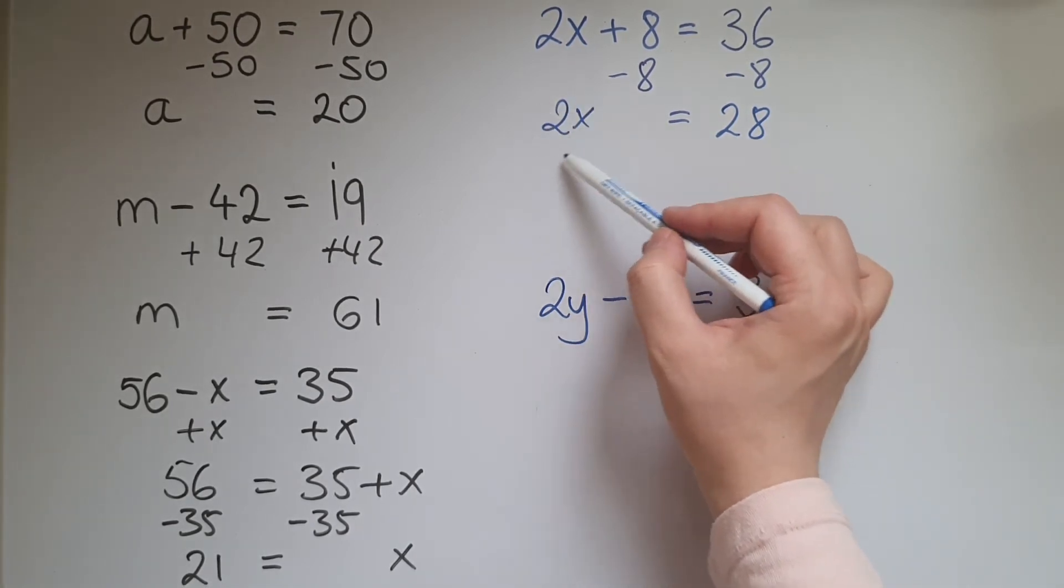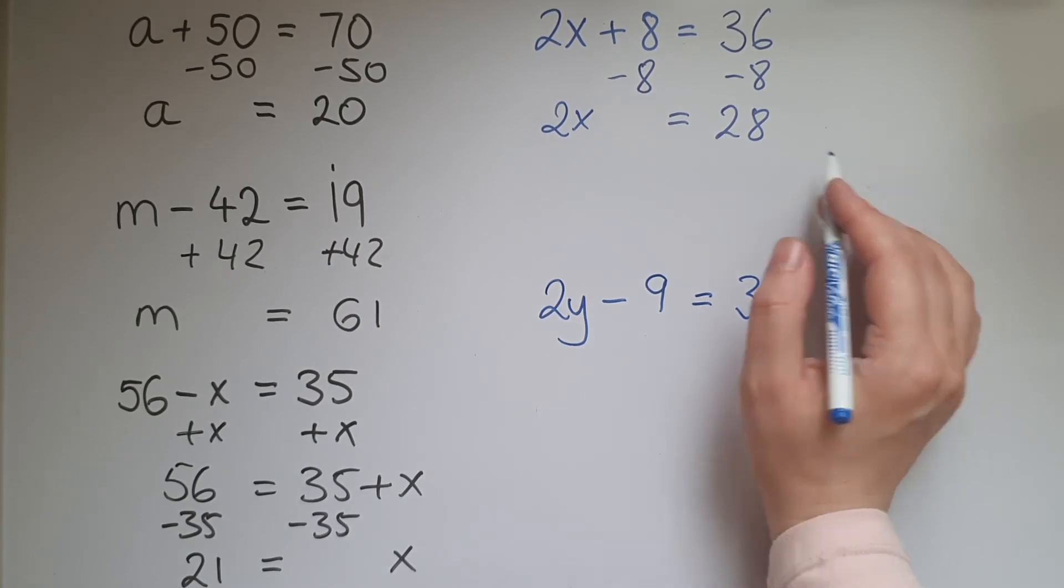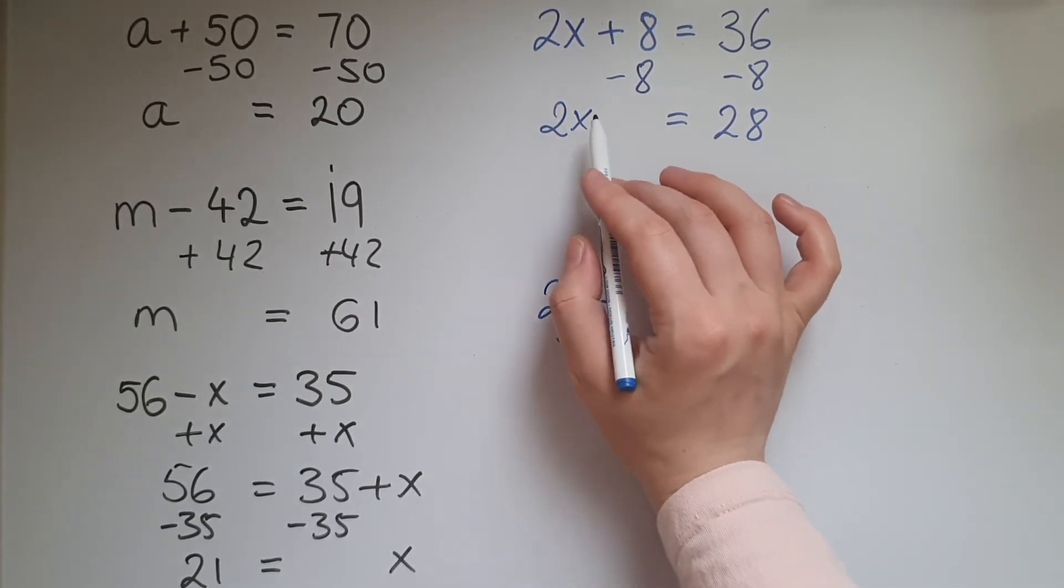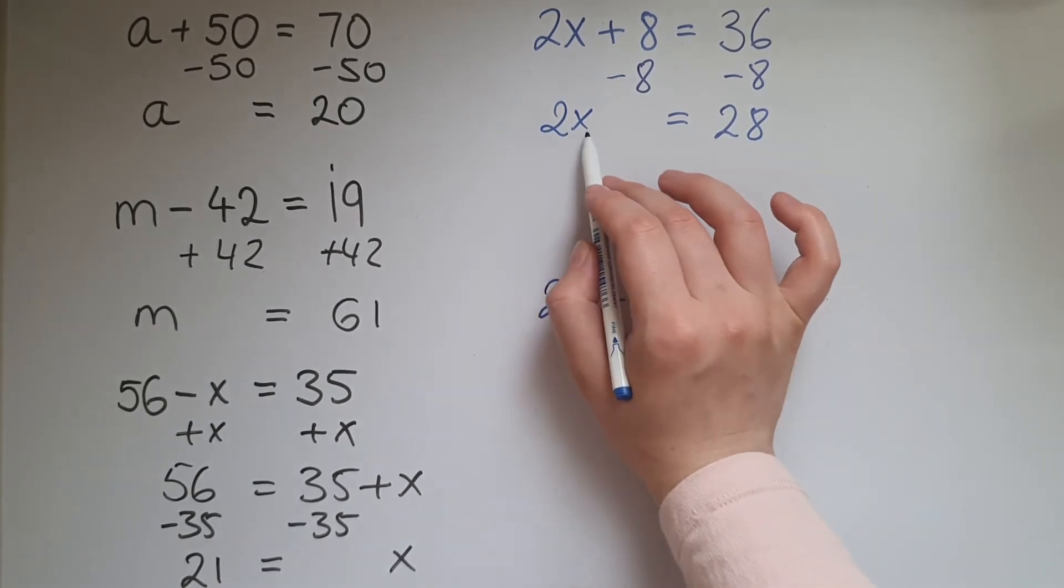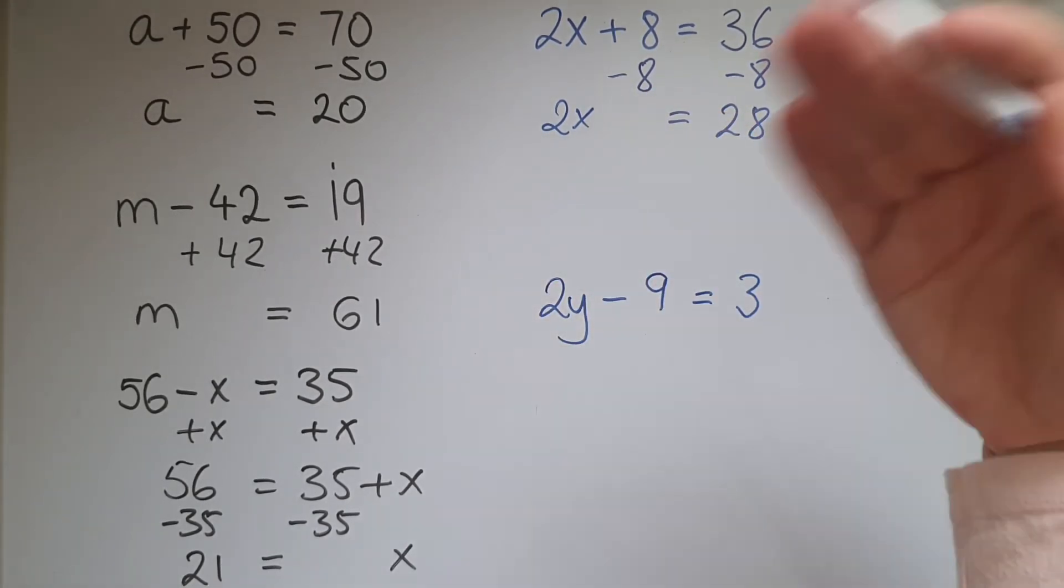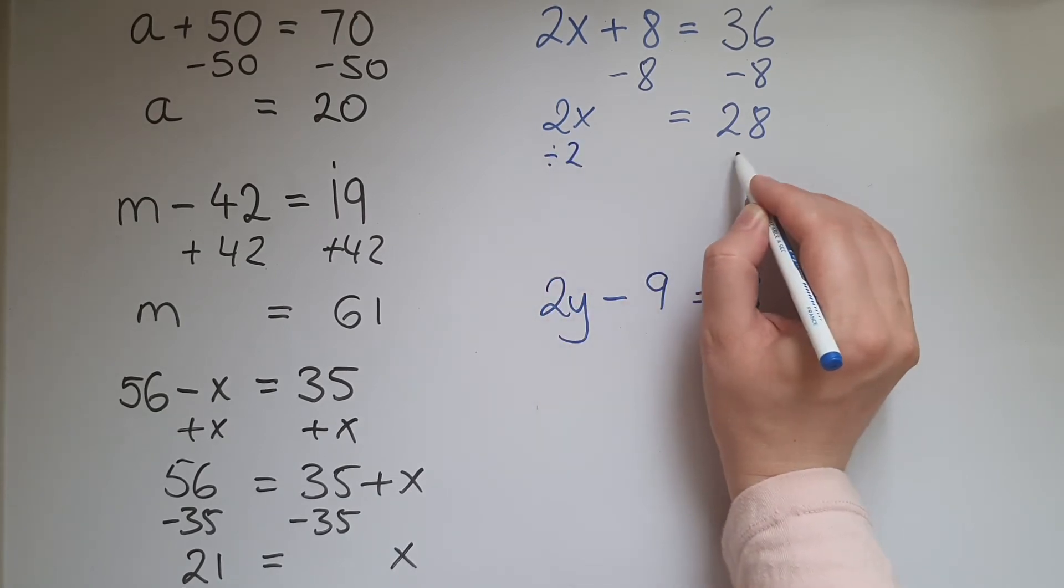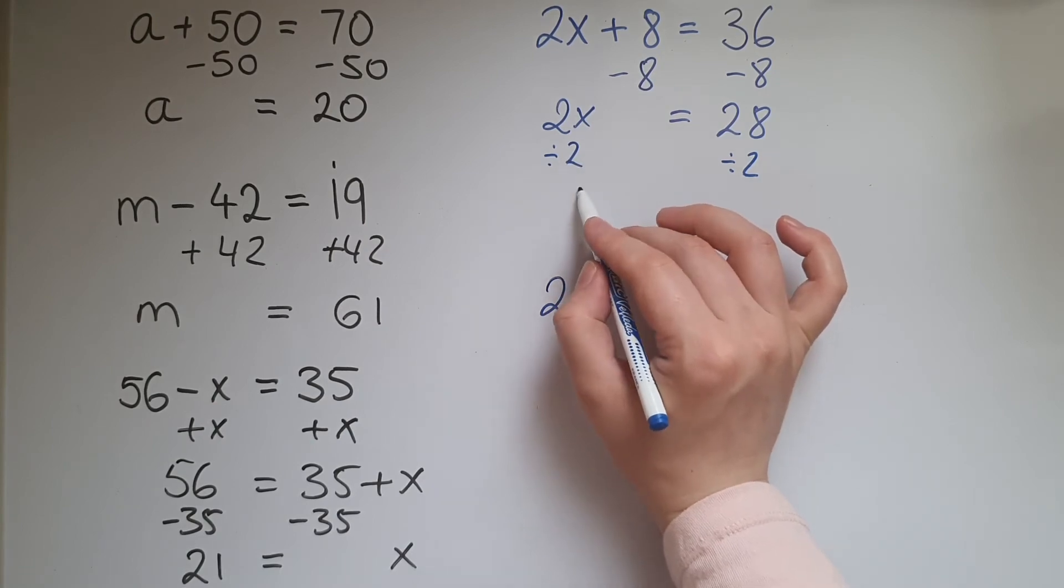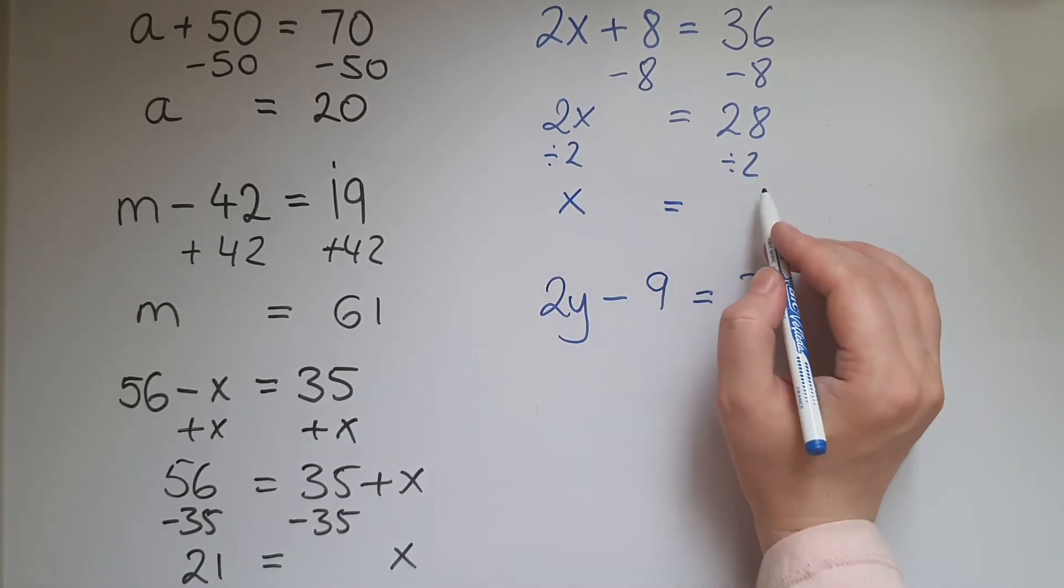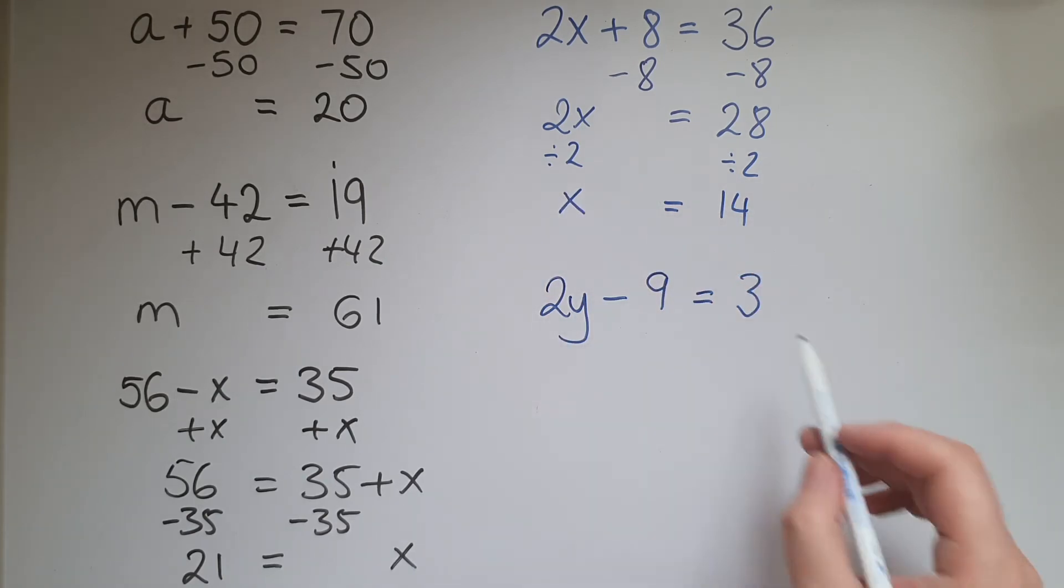So now we have only 2x on this side which is equal to 28. So 2 lots of x equals 28. What about 1 lot of x? So what are we doing to 2x to get just x on its own? So we've multiplied 2 by x, now we're going to divide by 2 to undo it. So 2x divided by 2 gives us just x. 28 divided by 2 gives us 14, so we have the value for x.